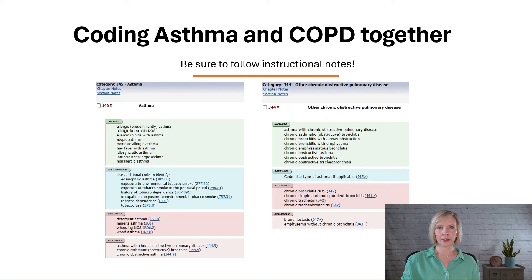Although we do not assign code J45909, Unspecified Asthma Uncomplicated, with a COPD code from category J44, there are exceptions for codes J45901, Unspecified Asthma with Acute Exacerbation, and code J45902, Unspecified Asthma with Status Asthmaticus. These codes can be used when a patient with COPD is experiencing an acute exacerbation of asthma or status asthmaticus, even if the specific type of asthma is unknown. This exception is made because while these codes do not specify the type of asthma, they do provide additional specificity, indicating that the asthma is currently in an acute exacerbation or status asthmaticus.